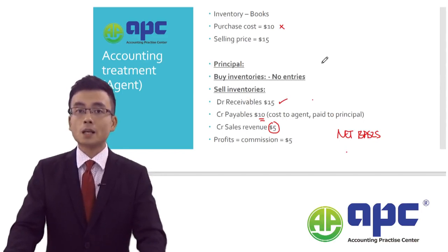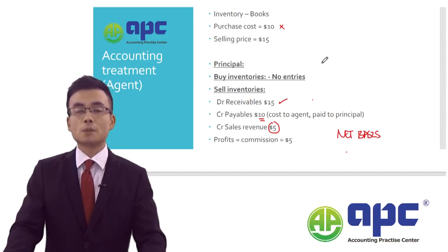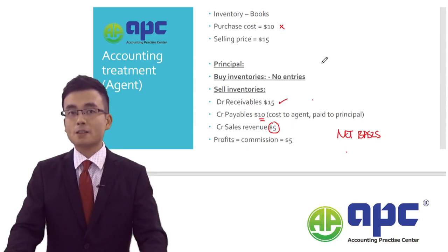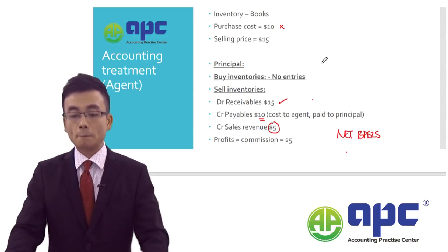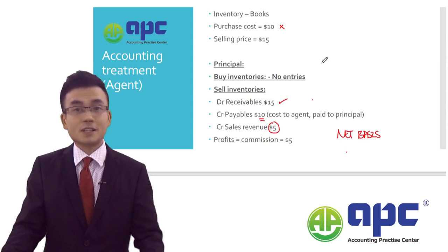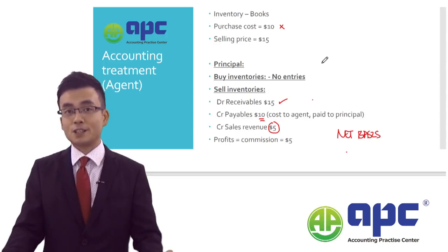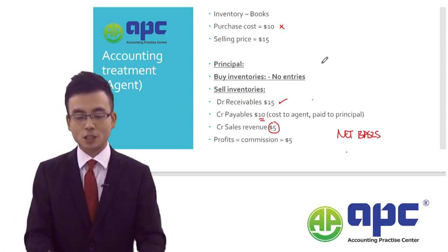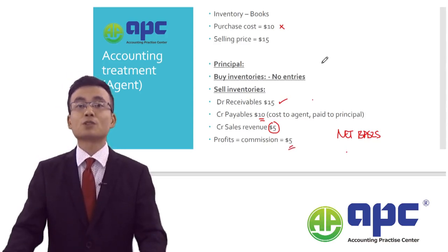Either method would certainly impact the profit in the same way, because in the first method the profit would be $5, and in the second method the profit would still be $5 of commission income.